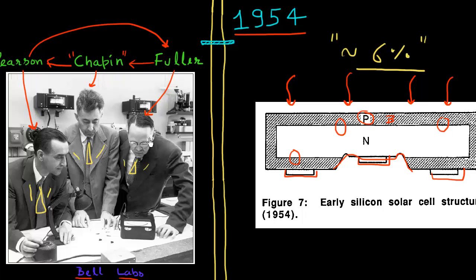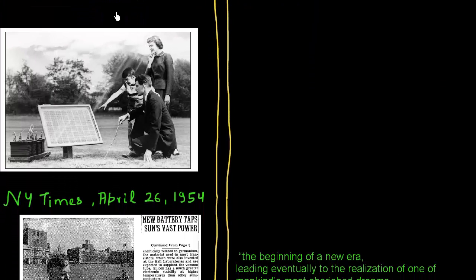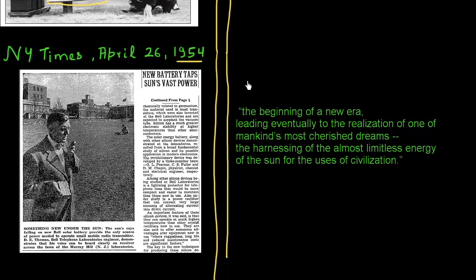And then they made a, they tried to generate some press publicity around this invention. So this is one of the images that was published in one of the popular magazine. Again, popularized by Bell Labs. And it's showing this family having this solar panel. And it all seems very blissful, sunlight coming in. And there was a big article in New York Times announcing this invention in 1954.